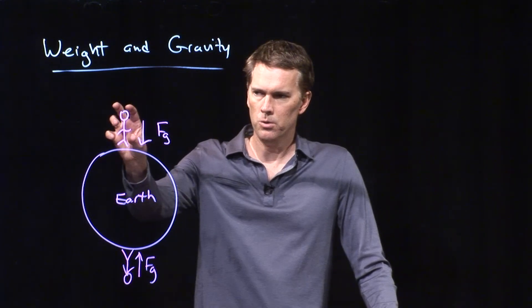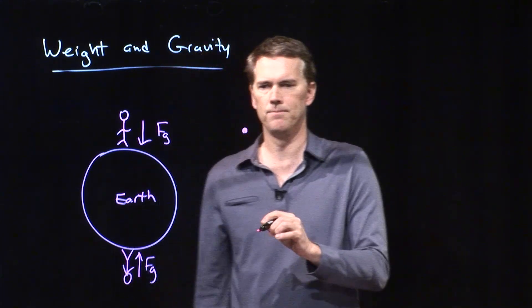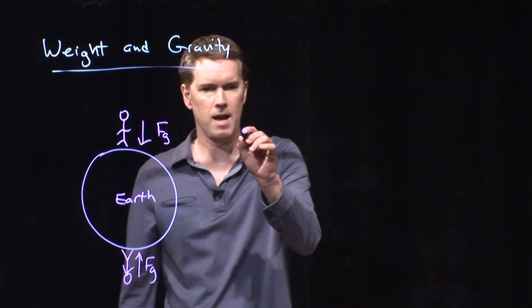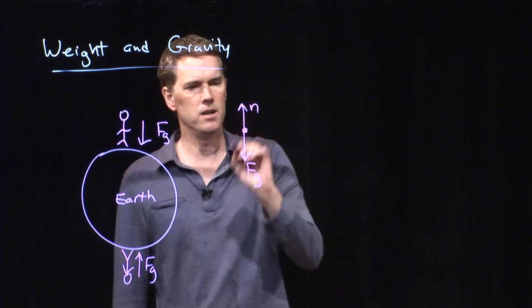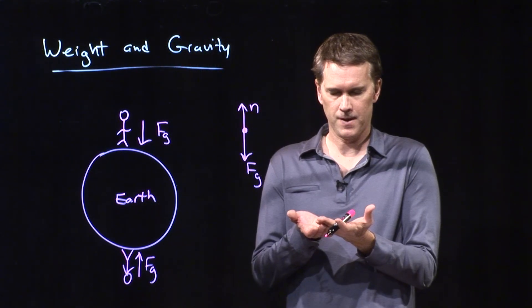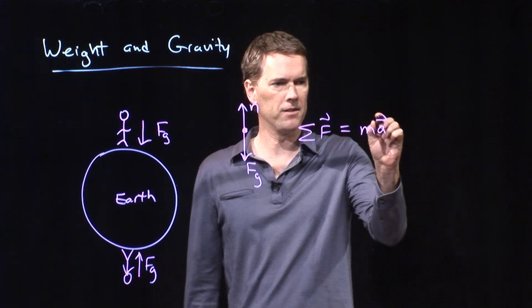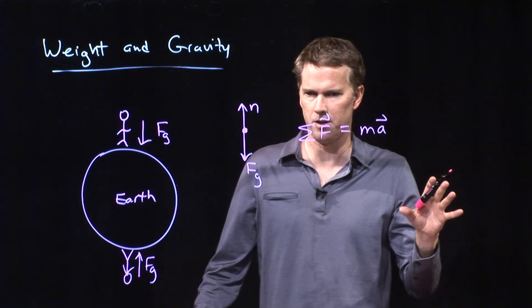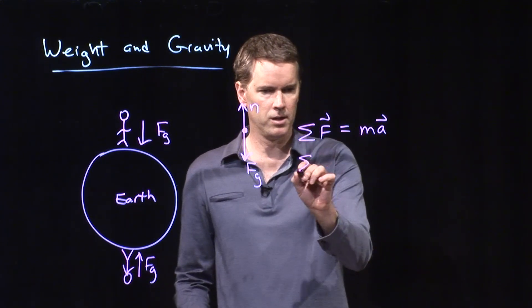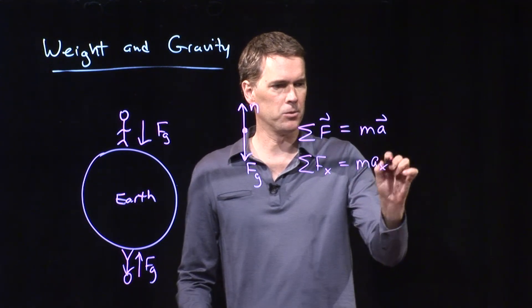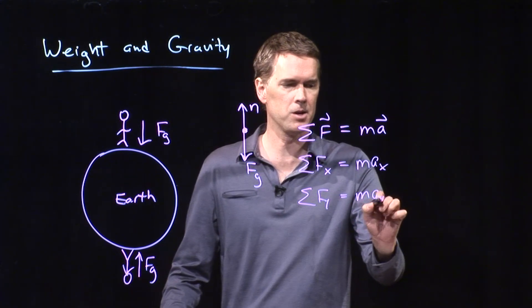Now when we think about you standing here on the earth, how do we draw a free body diagram for that? We make you a dot and then we identify the forces acting on you. You've got F sub G due to gravity, and then you have the normal force N, which is the earth pushing back up on you. If you are stationary, then the sum of the forces equals mass times acceleration, and acceleration is zero. We can break it into components: sum of forces in the x direction equals mass times acceleration in x, and sum of forces in the y direction equals mass times acceleration in y.